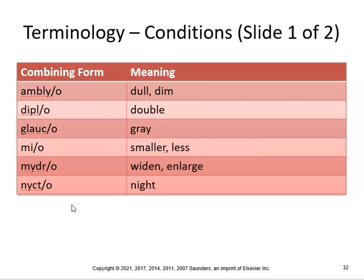Ambly means dull — amblyopia is dullness of vision, which can be caused by poor nutrition, trauma to the eye, or suppression of vision in one eye to avoid diplopia. Diplopia would be double vision. Glaucoma is a disease of the eye marked by increased intraocular pressure. My means smaller or less — miosis is a condition of contraction of the pupils. Mydr means wide and large — mydriasis is a condition of enlargement of the pupils. So miosis is contraction and mydriasis is enlargement. Nycto means night — nyctalopia is the condition of night blindness.